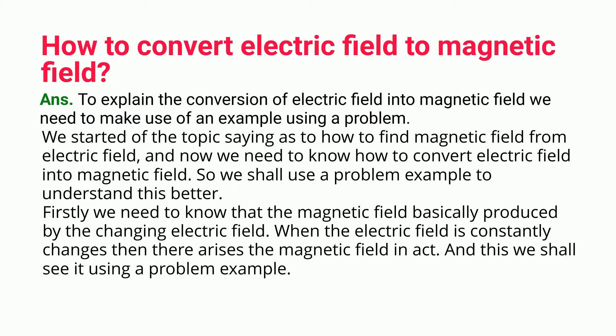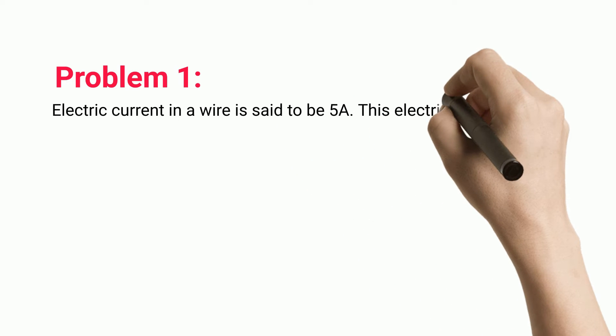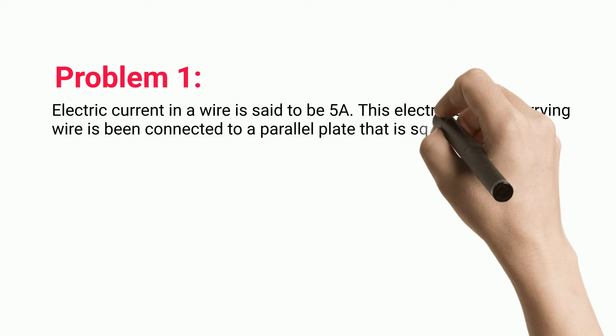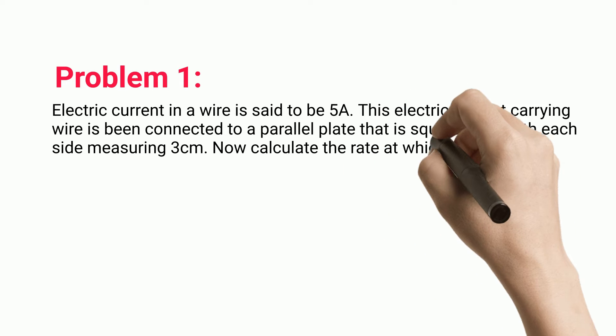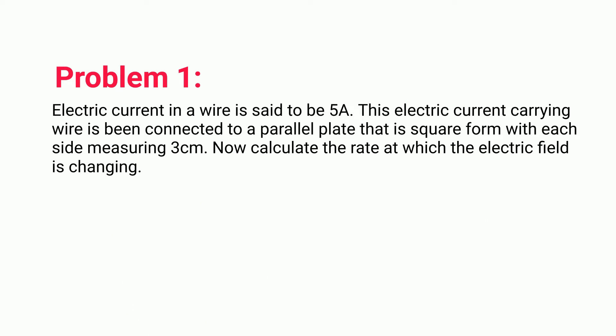Problem one: Electric current in a wire is said to be 5A. This electric current-carrying wire has been connected to a parallel plate of square form, with each side measuring three centimeters. Calculate the rate at which the electric field is changing.